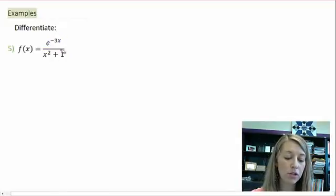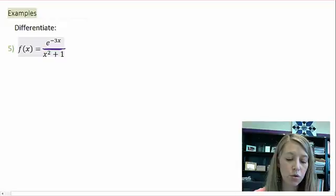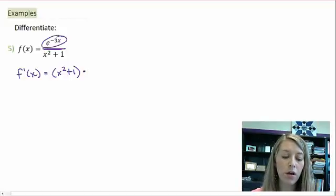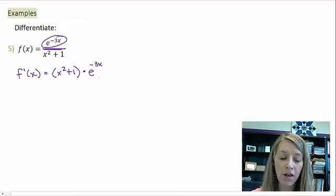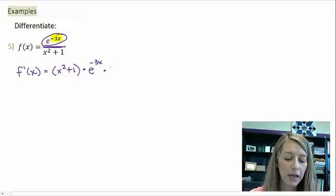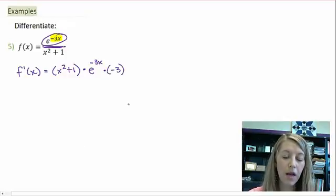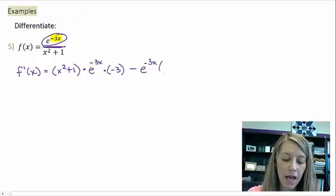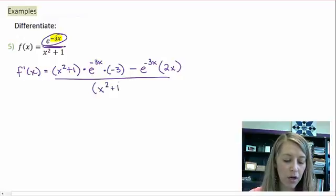All right. My first rule that I'm going to emphasize is the quotient rule. And so we have f prime of x is equal to the original of the denominator times the derivative of the numerator. Well, that's where I'm going to utilize my chain rule. So I have the derivative of the outside is just e to the negative 3x is itself times the derivative of the inside. Well, the derivative of the inside or the derivative of my power is negative 3. Now back to my quotient rule, minus the original of the numerator times the derivative of the denominator, very simply, 2x, all over the denominator squared.